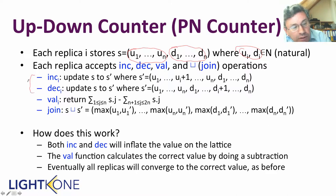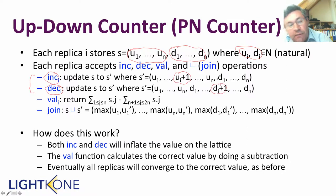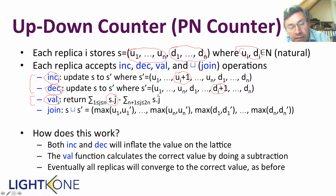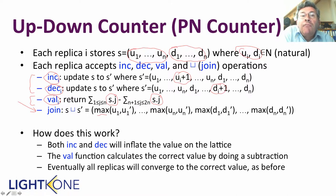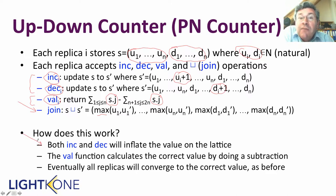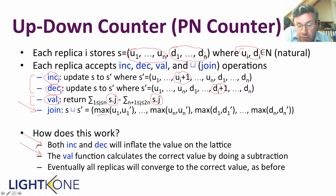Each replica will now accept an increment or a decrement. The increment will update u_i, and the decrement will update d_i. The value val_i is basically the sum of the u values minus the sum of the d values. The join operation is basically the same as before — it's the pairwise maximum of the vectors. Both the increment and decrement inflate the value, so we're always moving up on the lattice, and val then calculates the correct value by doing a subtraction.